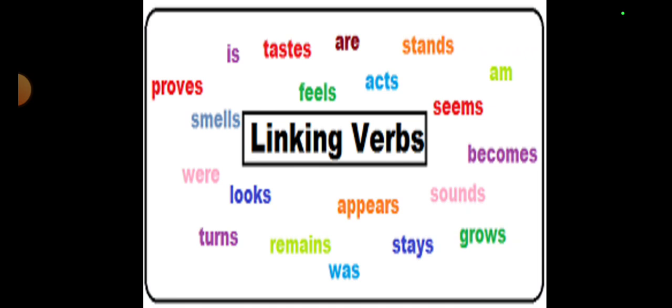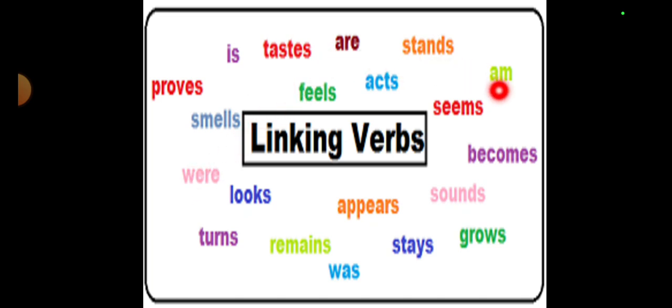The name 'linking verb' tells us it is going to link one thing to the other. This kind of verb will be a mixture — it means that you will get the form of 'be.' You know what 'be' represents: is, was, were, and many more. You can also see verbs that look like action verbs, but they have a different role. Different kinds of verbs have different names and roles.